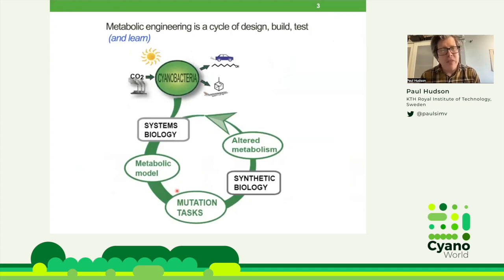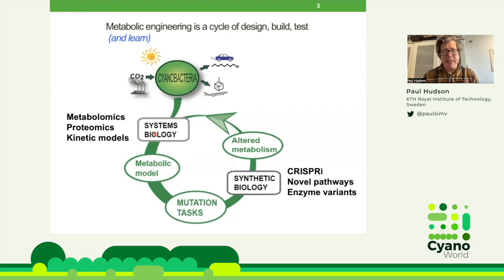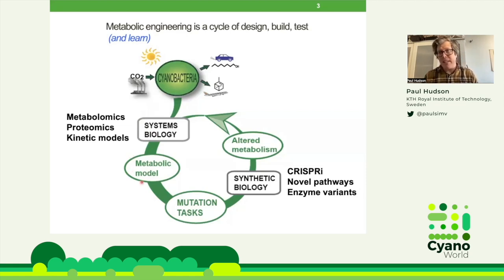In my group, we've done a lot of metabolic engineering, and I show here the kind of cycle that we've been following. We start with the cyanobacteria wild type strain and perform systems biology — studying the cyanobacteria using omics technology, such as metabolomics and proteomics. We can model the metabolism in the computer, and from this we get a model informed from omics data: enzyme levels, metabolite levels, and the genome.